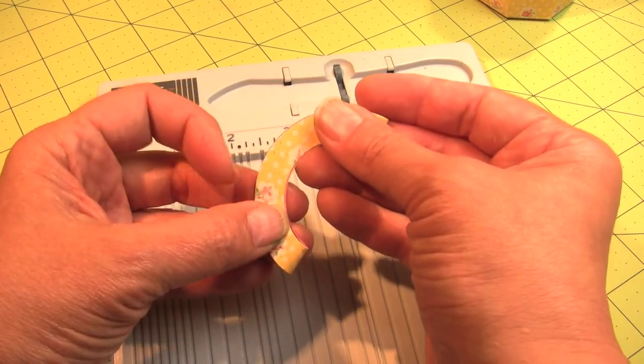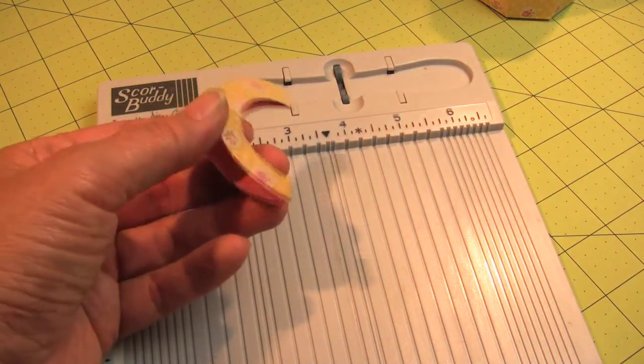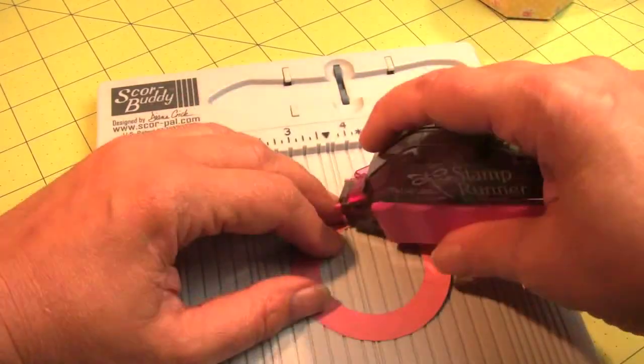I'm going to fold it in half and I think what I want to do on this one, since I've practiced and goofed up a different one, I am going to put a little bit of adhesive in between here before I trim it in half because you need two half circles for this.